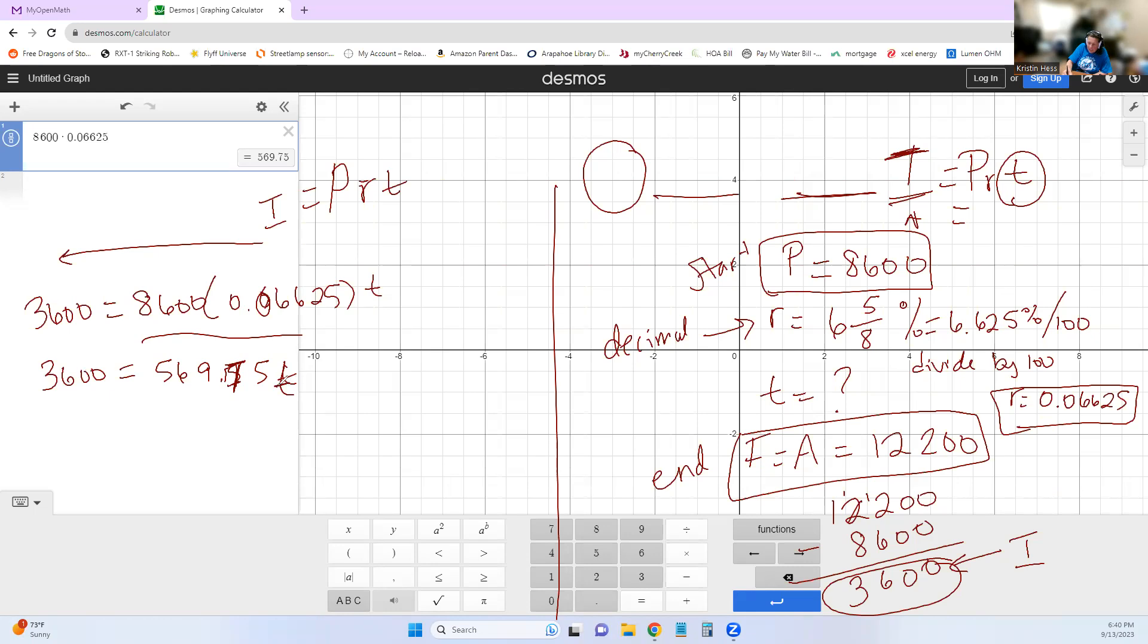So now we need to get T by itself. And so the way we do that is we're going to use the idea of opposites. So anything divided by itself is 1. And so our goal is to get a 1 T. And so to do that, we're going to divide this by 569.75, because these two values are being multiplied. 569.75 is being multiplied by T. So if we're dividing both sides by 569.75, that divided by itself is 1. So we're really left with 1 T is equal to whatever this works out to be.